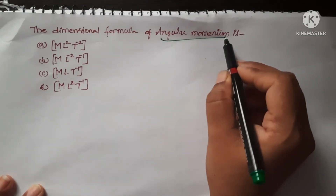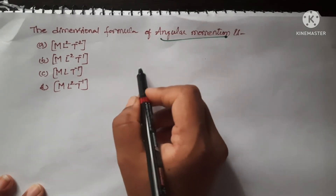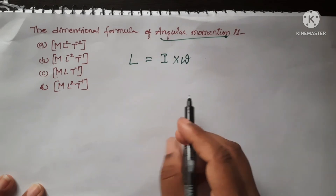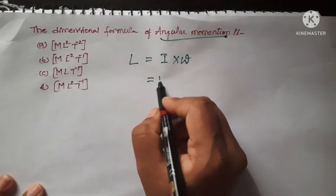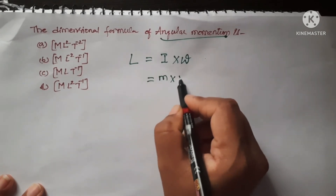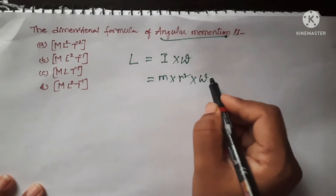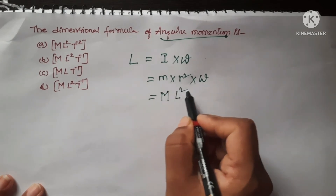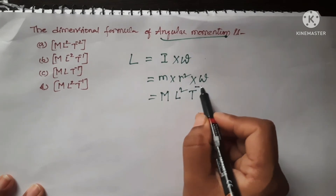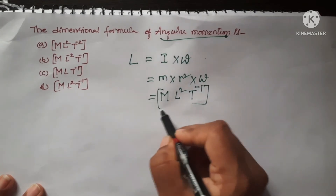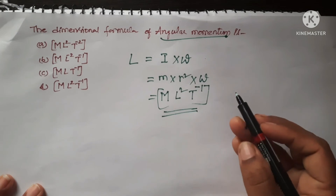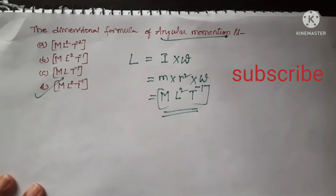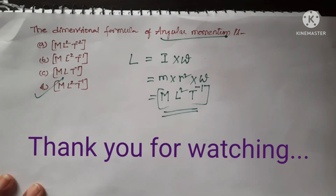Next question: the dimensional formula of angular momentum. Write the formula: angular momentum L = moment of inertia I × angular velocity ω. Moment of inertia formula is mass × distance², and angular velocity is T⁻¹. So the dimensional formula is M × L² × T⁻¹ = ML²T⁻¹. D is the correct option. I hope you understand. Please do like, share and subscribe. Thank you for watching this video.